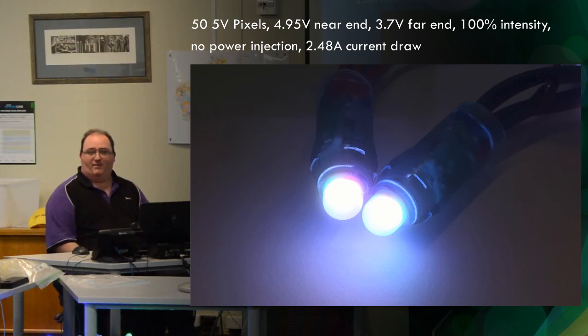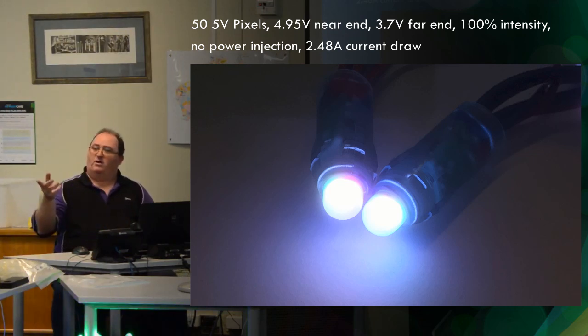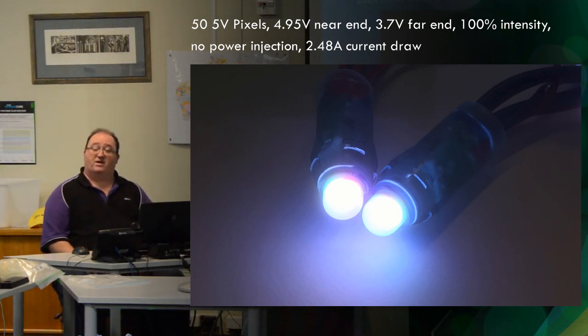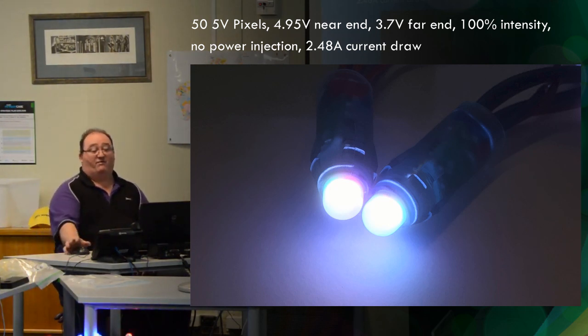Now here, we have a demo photo. We were talking earlier about the angle that you're looking at LEDs. You'll see that the one on the left is a little bit sort of pink. If I turn that around 180 degrees, it looks exactly the same color. So that's actually 50 pixels - the far end is 3.7 volts, the near end is 4.95 volts. To the eye, they look identical. So that's the first and last pixel in a set of 5 volt pixels. 100% intensity, I run all the way, show it 100%, and it draws 2.48 amps.